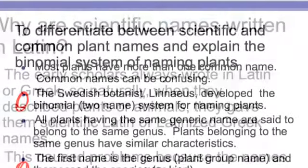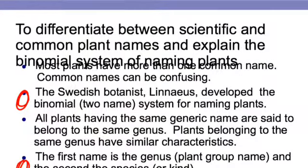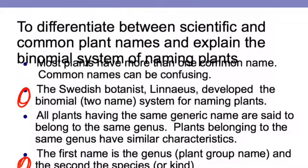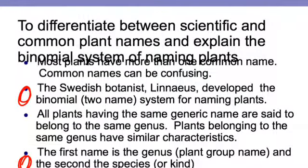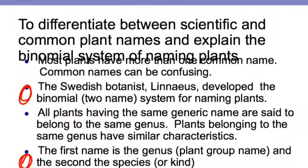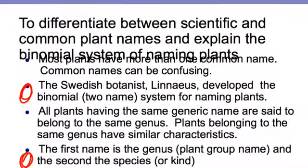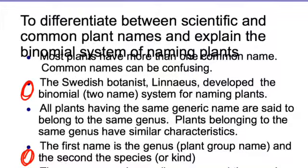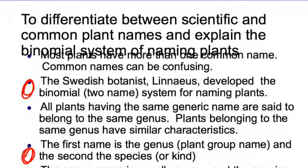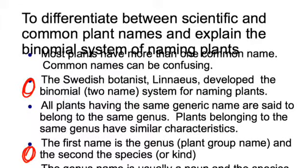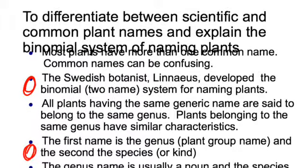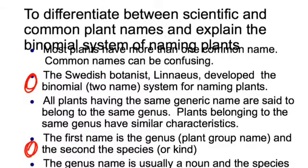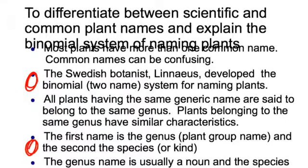The common names are really confusing because we go from language to language — what might be called a red maple in our language may be referred to as something else in Russian. So there was a Swedish botanist named Linnaeus — you've probably heard of him in science class — who came up with a two-name binomial system for naming plants. All plants with the same genus or generic name belong to the same genus and share similar characteristics. The first name is the genus or plant group name, and the second is the species.